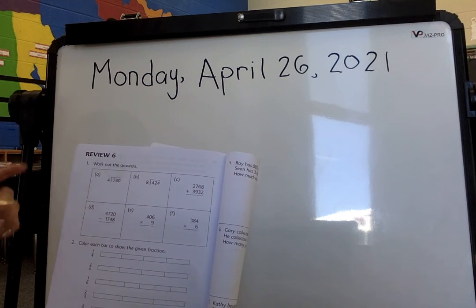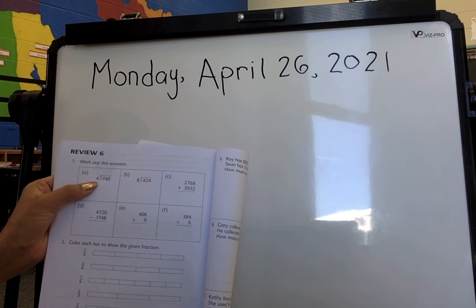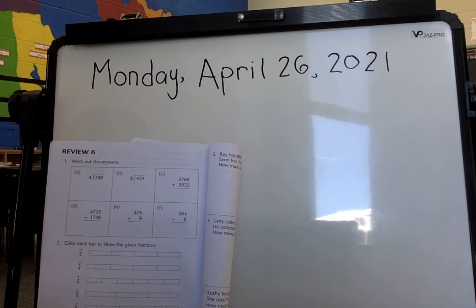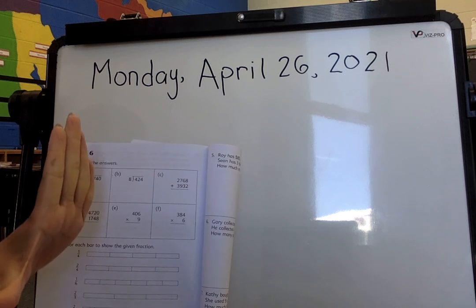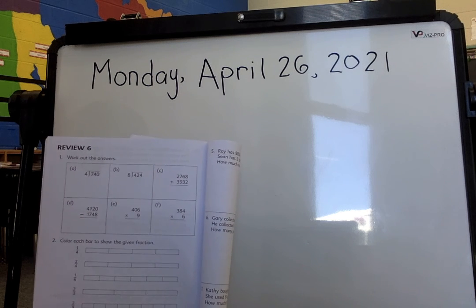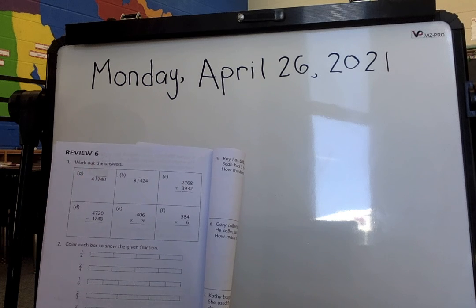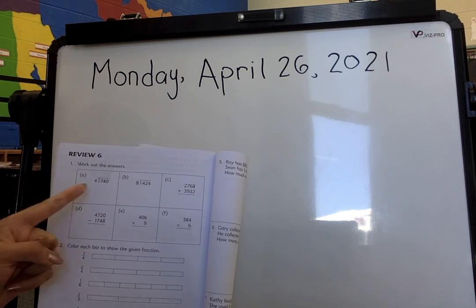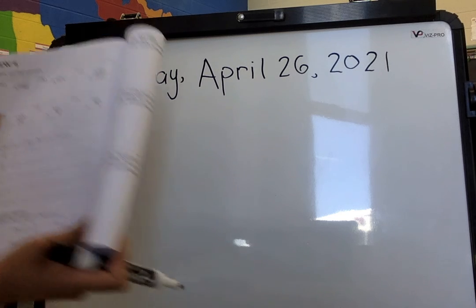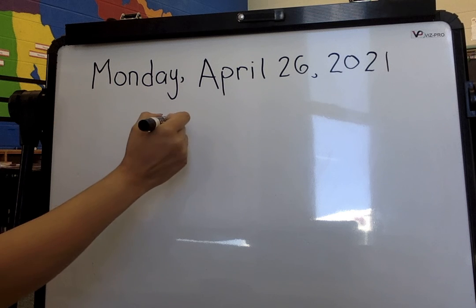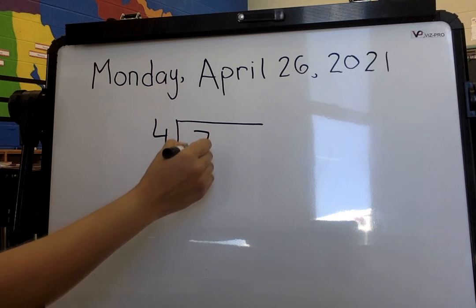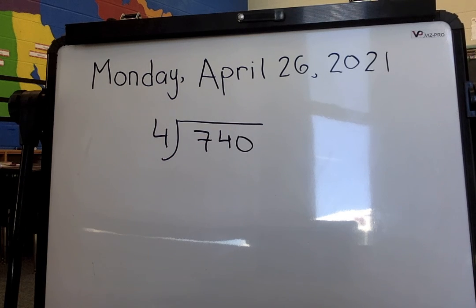So our first question is, we have 740 and we need to divide it by 4. So you need to take out your times table, those sheets that I gave you, the laminated ones. And remember, our yellow numbers go at the top and our multiples, the black numbers, go at the bottom whenever we are dividing. So let's get started with 740 divided by 4.